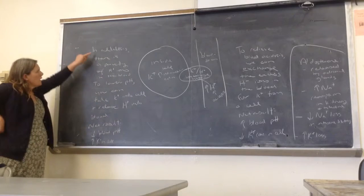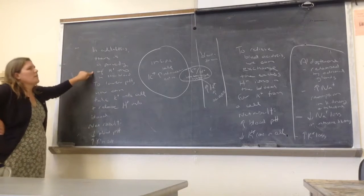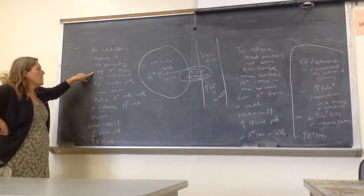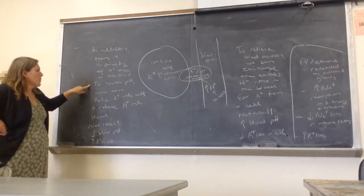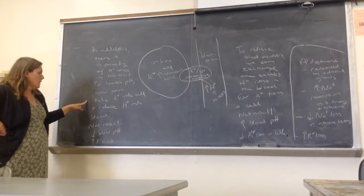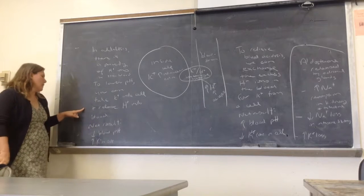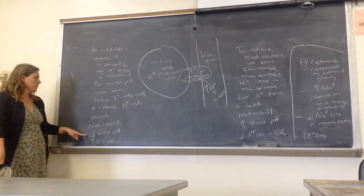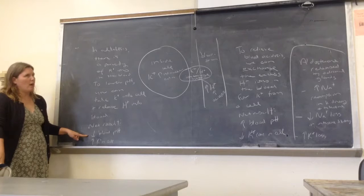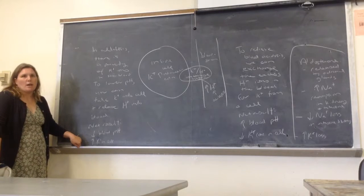The opposite is true in alkalosis. In alkalosis, there's a paucity, or a lower concentration of hydrogen ions in the blood. To lower the pH, you can take potassium ions into the cell and release hydrogen ions into the blood. The net result is you've lowered the blood pH, because you added hydrogen ions, and you've increased the potassium in the cell.